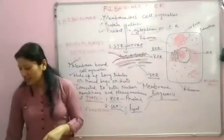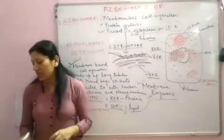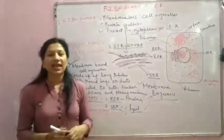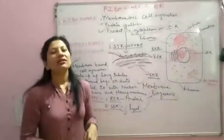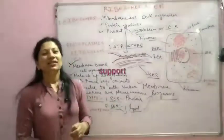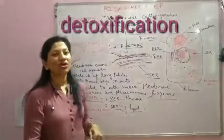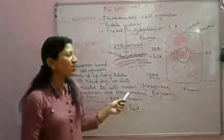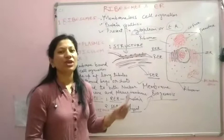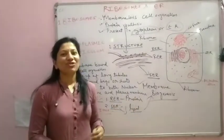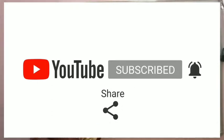The second function is transportation — the endoplasmic reticulum helps in intracellular and intercellular transportation of substances. The third function is support — it provides internal support to the cytoplasm as well as other cell organelles. The last function is detoxification. I hope all the points regarding ribosomes and endoplasmic reticulum are clear. If you have any doubt, write in the comment box. If you liked the video, subscribe to the channel and press the bell icon. Take care, goodbye.